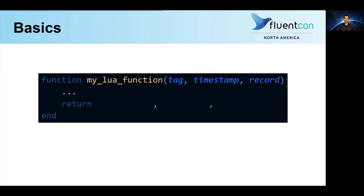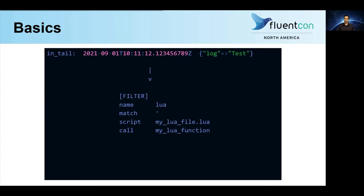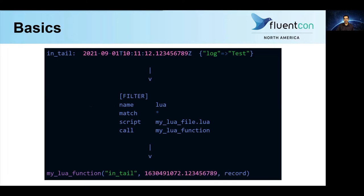The second is the Fluent Bit timestamp associated with the record, formatted as an epoch timestamp with nanosecond resolution. And the third and final argument is the record itself, formatted as a Lua table. For those of you who don't know what a Lua table is, it's an associative array, which is essentially also a structured collection of key-value pairs. So, for example, let's say we have the following input log, represented in Fluent Bit as the following record, associated with the following record timestamp and the following tag. If this record matches our Lua filter, then Fluent Bit automatically calls the specified Lua function on that record and supplies the associated tag, the equivalent epoch timestamp, and the equivalent Lua table as arguments.